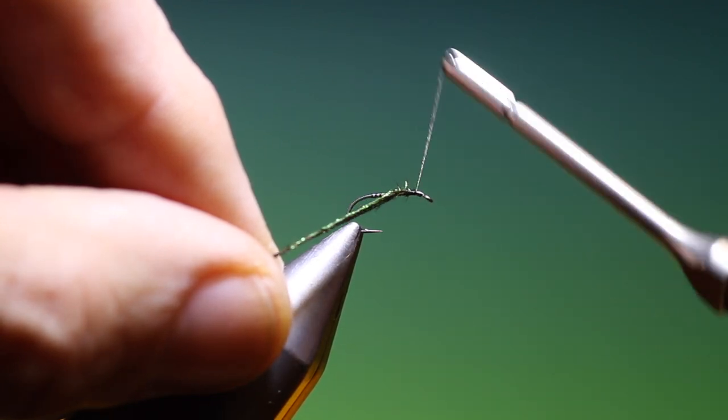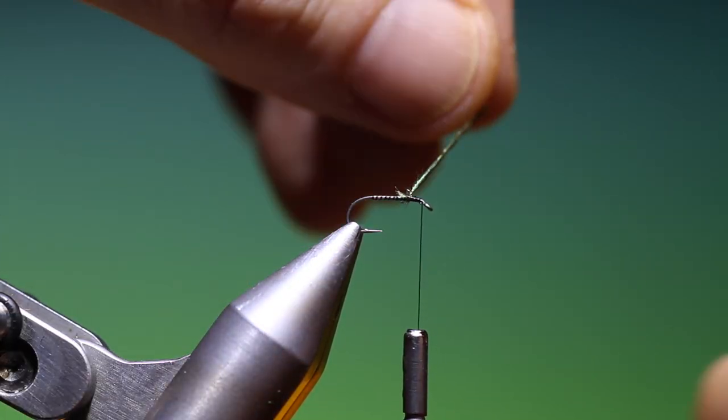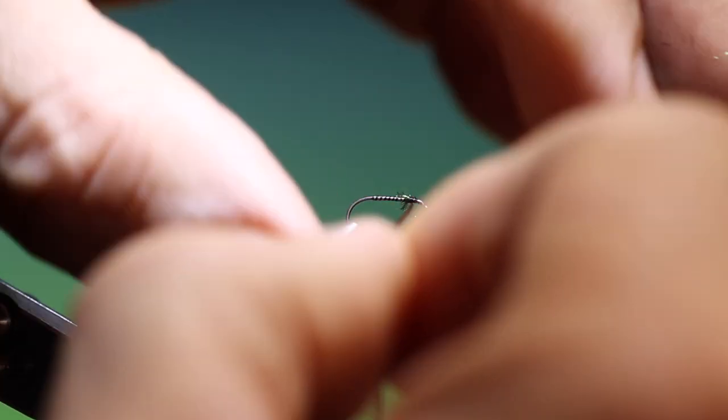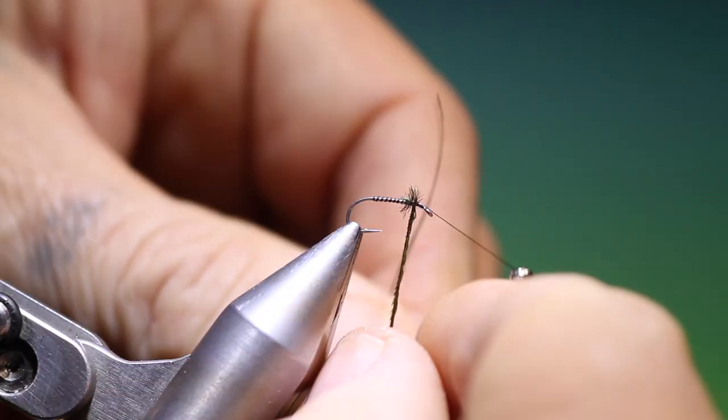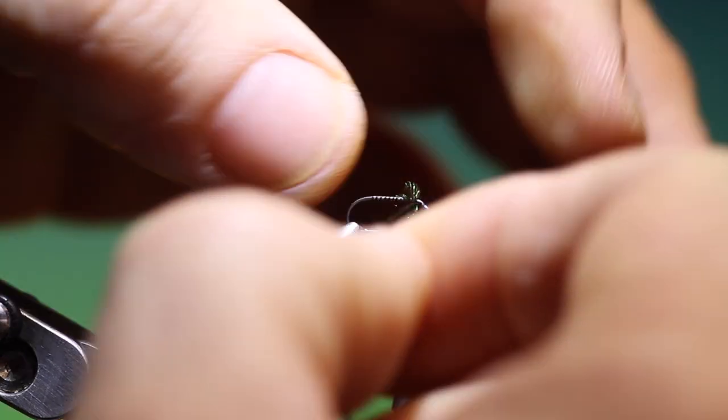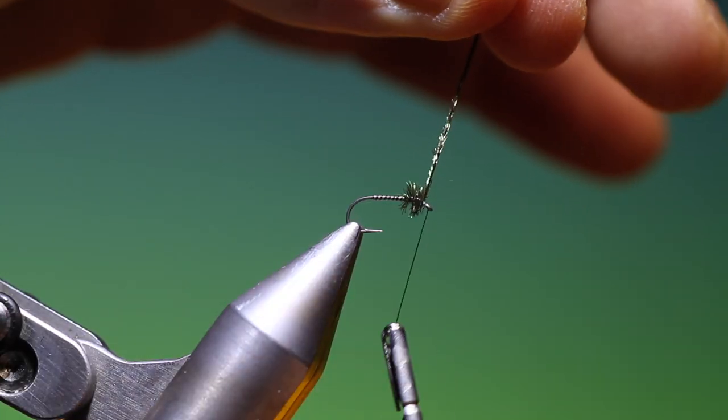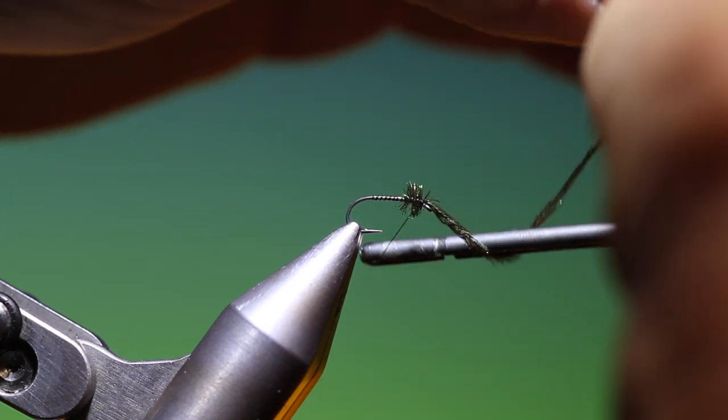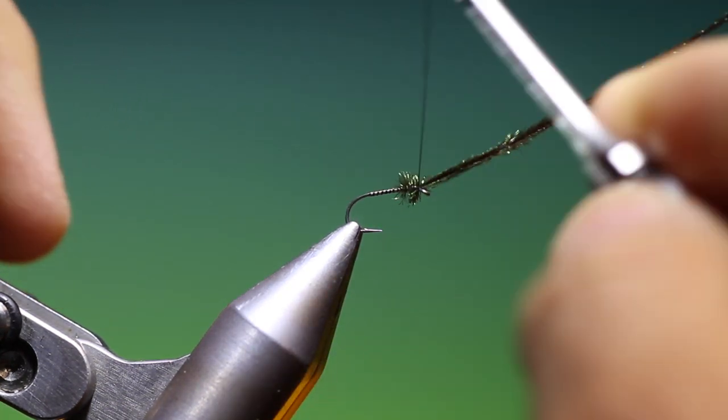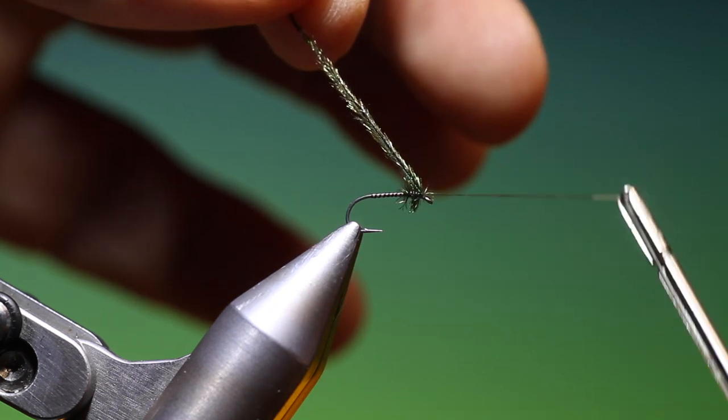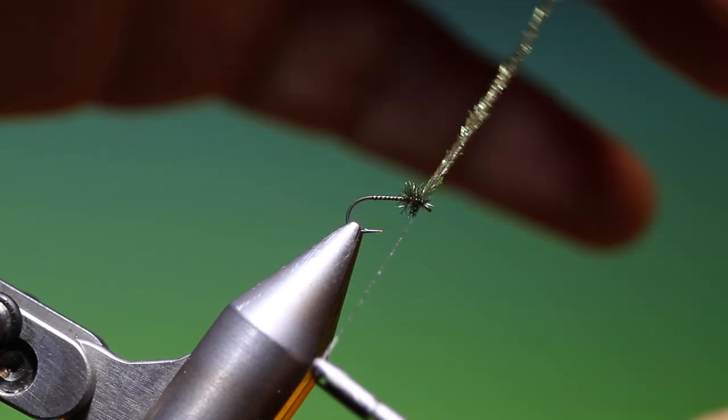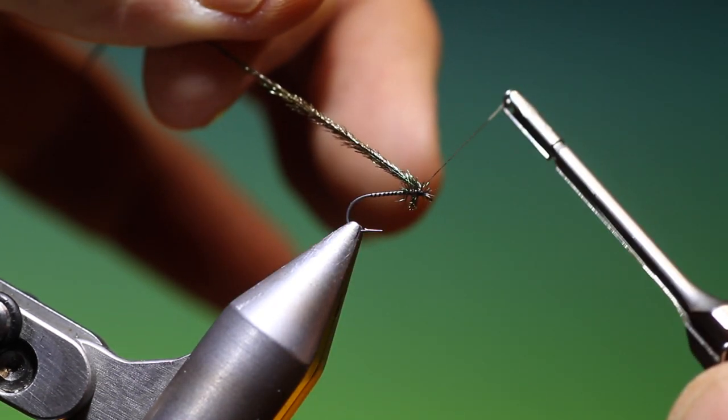And we go forward to there. And then all we need to do is four or five turns forward, just secure that peacock curl.